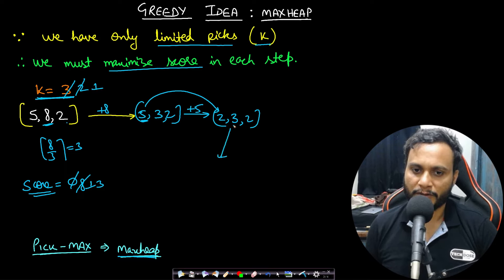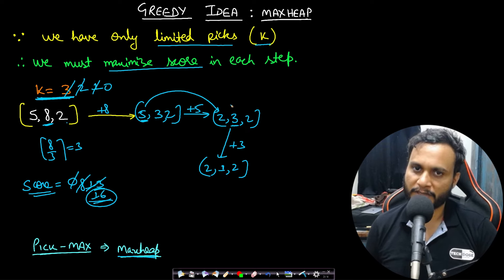Again your k value became 1. Again you do one more step and you will pick 3 now. So your score will be added with plus 3, this became 16. The changes will be 3 by 3 ceiling will be 1, and this becomes 2. So we have run out of the k steps. The k became 0 and we have to stop. Our final score is our maximal answer which we had solved greedily using a max heap.